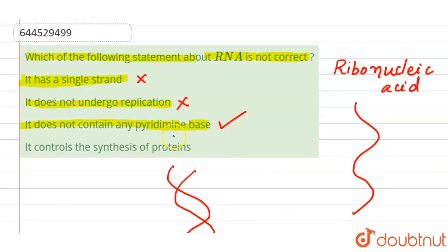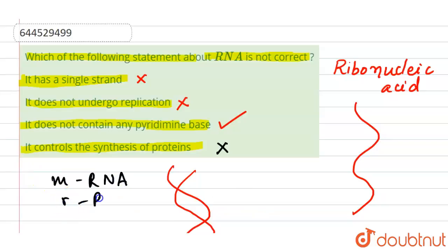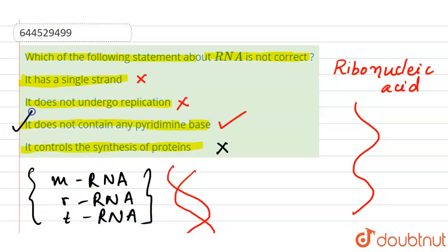The last statement — RNA controls the synthesis of proteins — is also correct, so it will not be our answer. Proteins are synthesized by RNA molecules in the cell, but the message for synthesis is coded in DNA. There are three types of RNA molecules: mRNA, rRNA, and tRNA, which help in the synthesis. So our answer is the third statement, because it is incorrect.